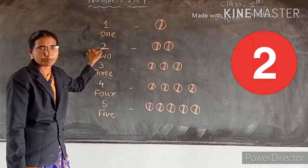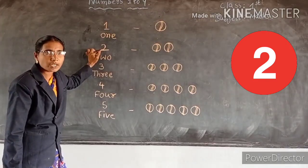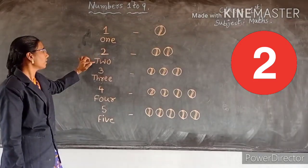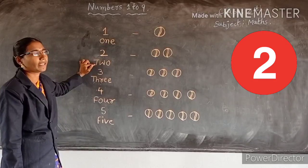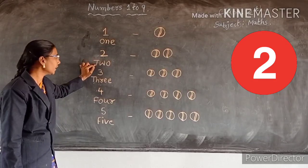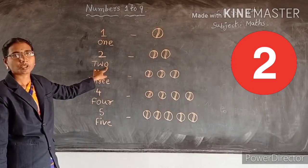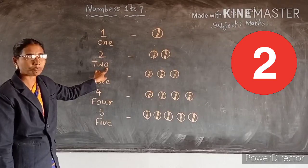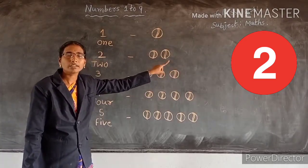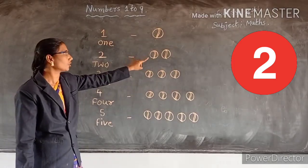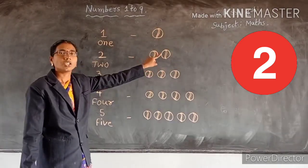What is this number? 2. What is this spelling? T, W, O. 2. How many parts are there? 2 parts. 1, 2.